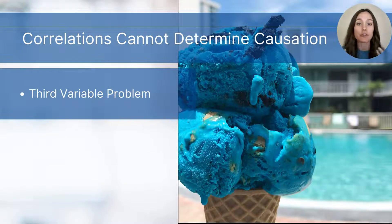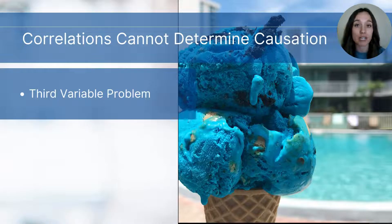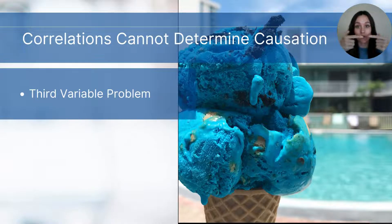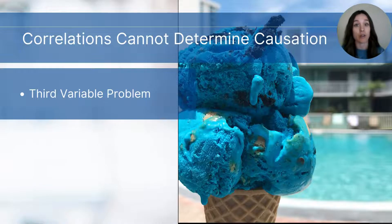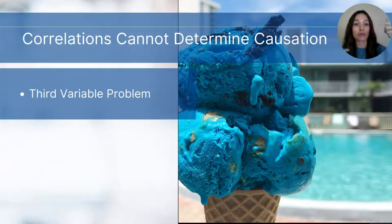Another factor to be aware of when evaluating correlational research is the third variable problem — another reason why you cannot determine that correlations equal causation. The third variable problem occurs when an unmeasured variable, variable C, is actually influencing variables A and B and creating a false impression that A and B are directly related to one another. For example, suppose a study finds a correlation between ice cream sales and drowning incidents.